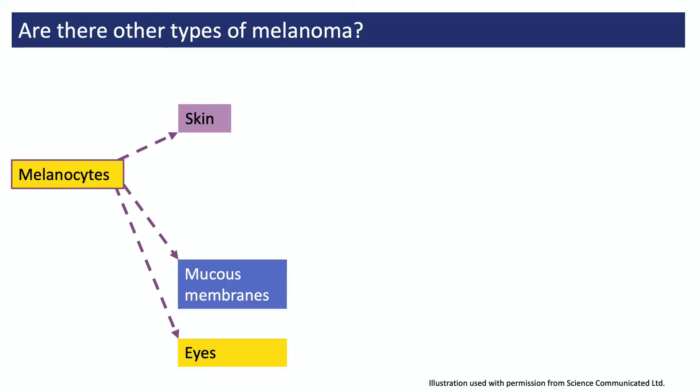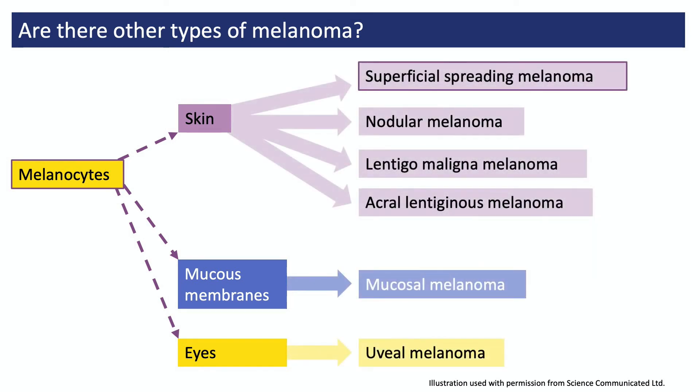Another thing about melanocytes is that they aren't just found in the skin. You also find melanocytes in your body's mucous membranes — these moist membranes line our airways, our digestive tract, our urinary tract, the rectum, anus, and vagina. And there are also melanocytes in our eyes. Because melanocytes are found in all these different places in the body, it's also possible to develop melanoma in all of these locations. In addition, there are various types of melanoma skin cancer. The most common is superficial spreading melanoma, which is the official diagnosis of most people diagnosed with melanoma in the UK. You can find out more about all these rare melanoma types on the Melanoma Focus website.